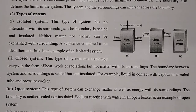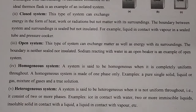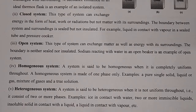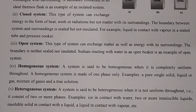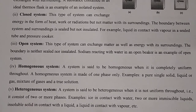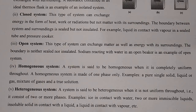Next, let's discuss homogeneous and heterogeneous systems — this was also discussed in chapter one. A system is said to be homogeneous when it is completely uniform throughout. A homogeneous system is made of one phase only, like milk and water. Examples include a pure single solid, liquid, or gas, a mixture of gases, and a true solution such as glucose solution or NaCl solution — where one component is fully dissolved into another.